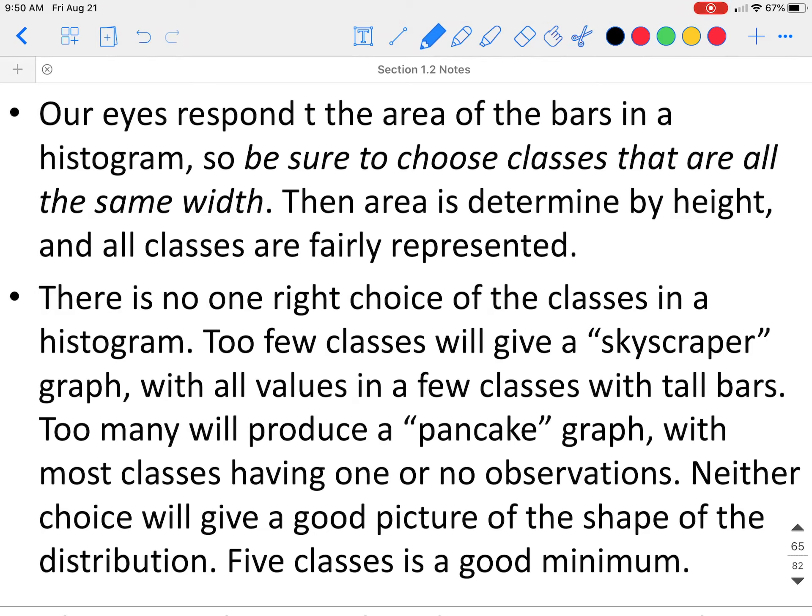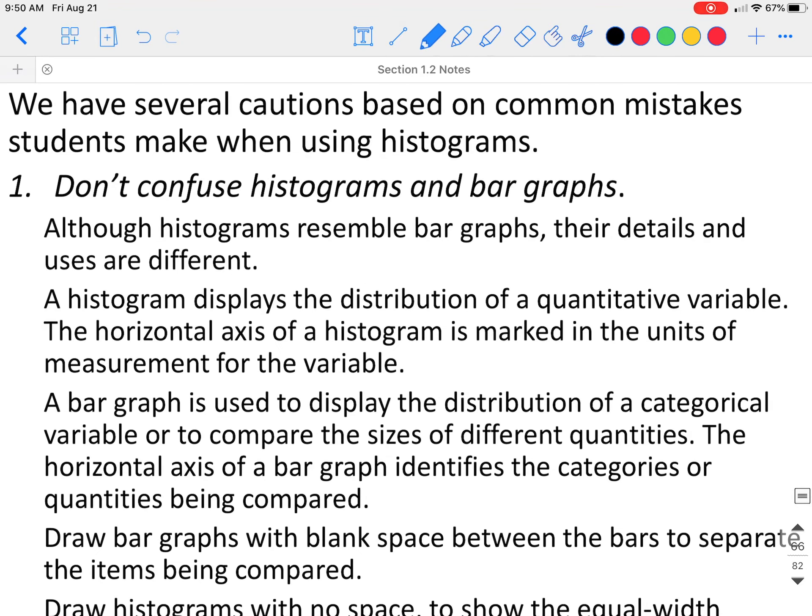There is no one right choice of the classes in a histogram. Too few classes will give you a skyscraper effect with all the values in a few classes and very tall bars. Too many will have a pancake effect, which will have a very flat graph. Neither choice will give a good picture of the shape distribution. Five classes is a good minimum.